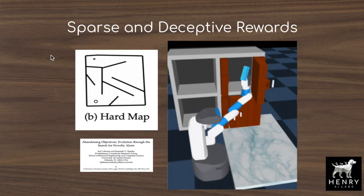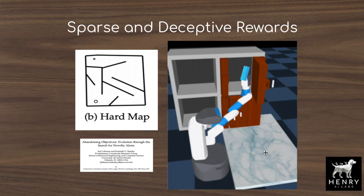These images further depict the problem of sparse and deceptive rewards. In the robotic pick-and-place task, the robot has to start from some initial configuration and learn to grasp and pick up an object, then put it into the top left, top right, bottom left, or bottom right shelves. It only receives reward once it successfully places the object on a shelf. It has to learn grasping first without any reward signal, and you can imagine all sorts of random behavior as the robot randomly moves the arm before it even learns to pick up the object, let alone place it on the shelf.